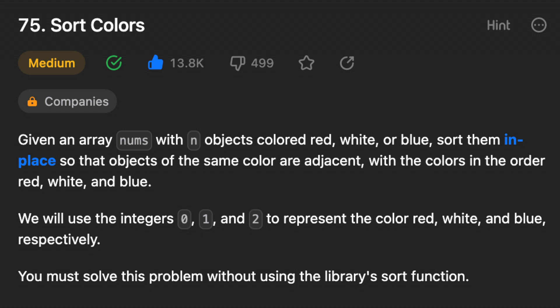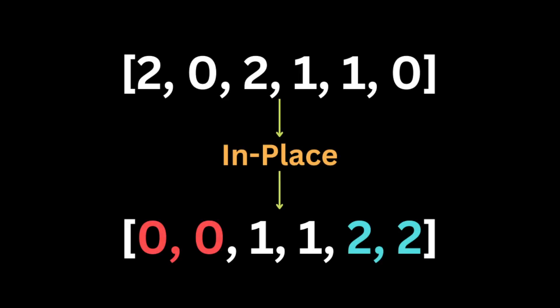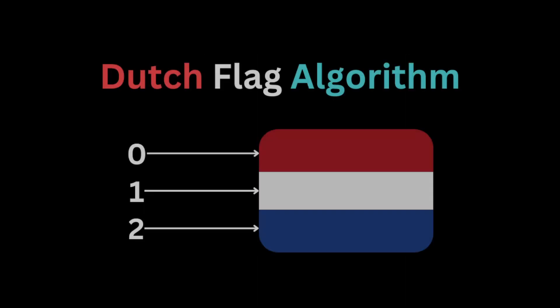Hello everyone. In this video I will show you how to solve the problem called Sort Colors. The problem gives you an array of integers and asks you to sort the array in-place, meaning constant space complexity, in the range zero, one, and two. The output array should have all the zeros first, followed by the ones, and finally all the twos. To solve this problem, I'm going to use the Dutch National Flag algorithm.